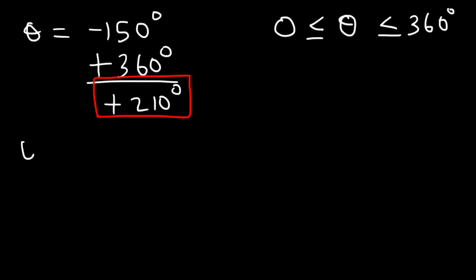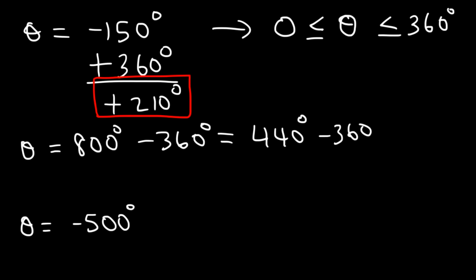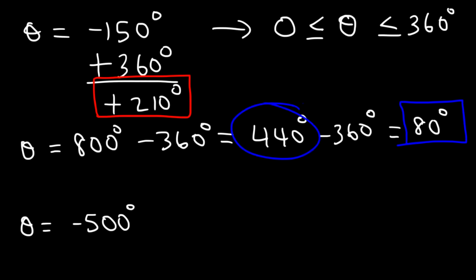Go ahead and find coterminal angles in this range given 800 degrees. Because 800 is above 360, we need to subtract by 360. 800 minus 360 is 440. Now 440 is still too high, so you need to subtract by 360 again, and this gives you 80, which is between 0 and 360. So 80 is the coterminal angle we want. 440 is another coterminal angle, but it's not in the range.